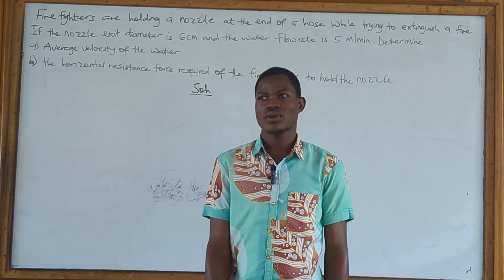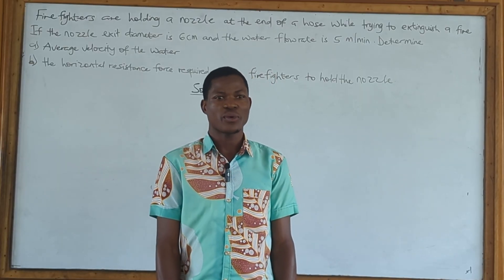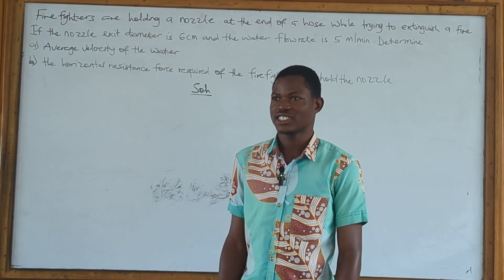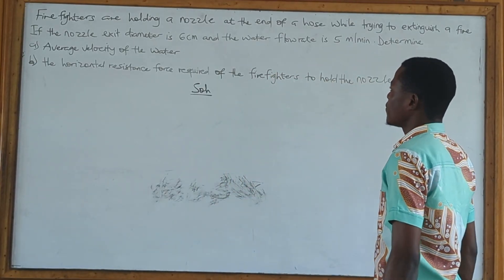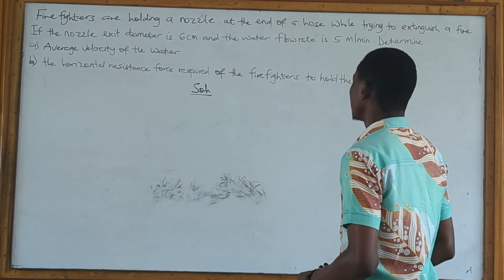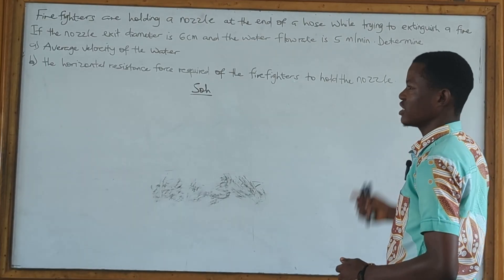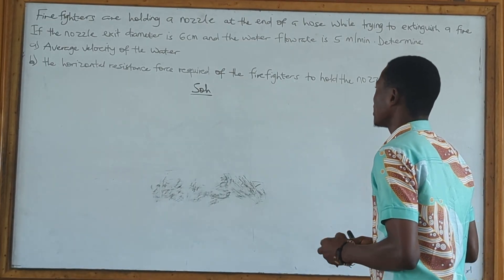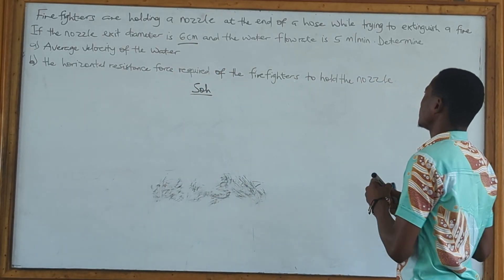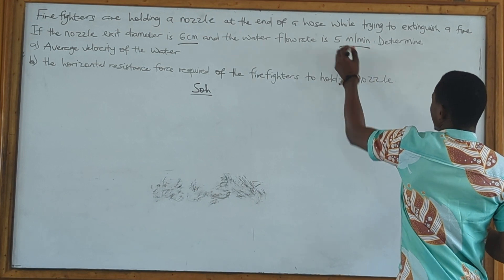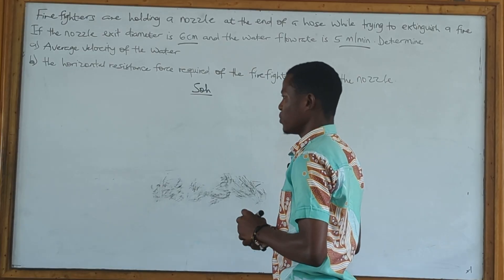Hello everyone, welcome back to MatabGH. In this video, we are going to solve the question on the board here. The question reads: firefighters are holding a nozzle at the end of a hose while trying to extinguish a fire. If the nozzle exit diameter is 6 centimeters and the flow rate is 5 meters cubed per minute, determine the average velocity of the water.